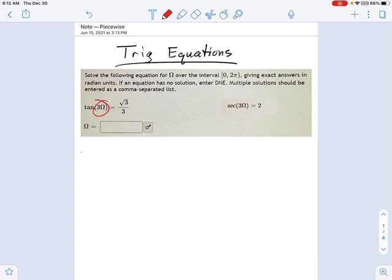And what do we do with that 3 times the variable in there? Well, you might be thinking it's no problem, I'll just get the answer for 3 omega and then divide it by 3, and that's basically what we do.